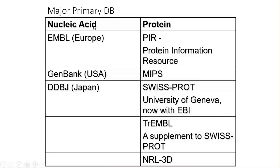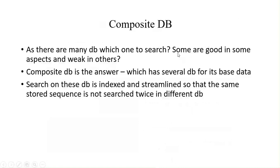We have nucleotide sequences, RNA sequences in transmittal form, and protein sequences in genetic sequence form. There is EMBL from Europe, GenBank provided by the USA, and DDBJ provided by Japan. For protein databases, we have PIR — Protein Information Resource — Swiss-Prot from the University of Geneva, EBI TrEMBL, and NRL-3D.